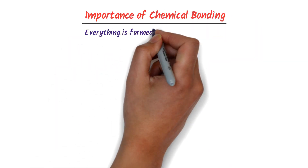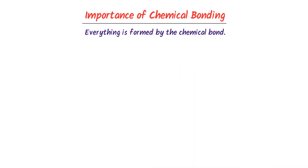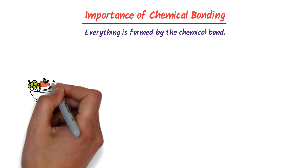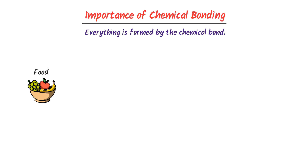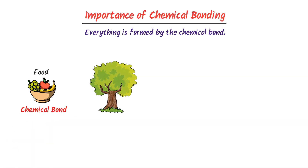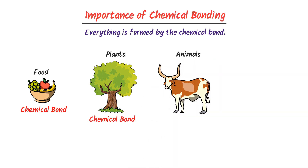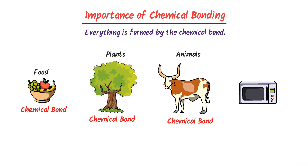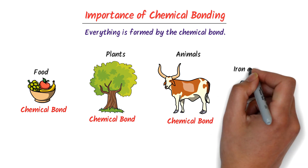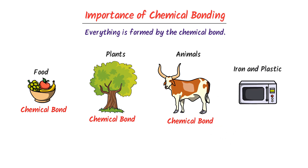Now let me teach you the importance of chemical bonding. Everything in the universe is formed by the chemical bond. For example, the food we eat, the plants we see around us, the animals we see, and all the materials we use in daily life like iron and plastic are made by the chemical bond. Remember, it is chemical bonding between atoms that forms everything in the universe.